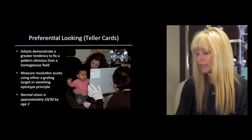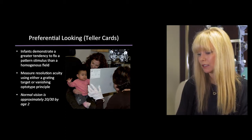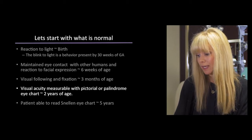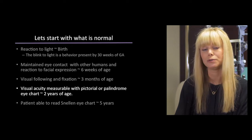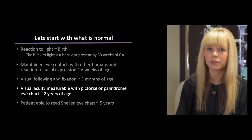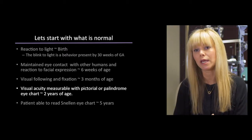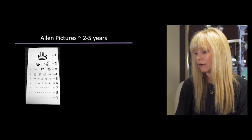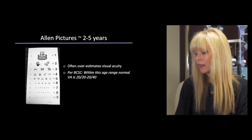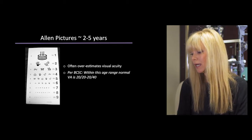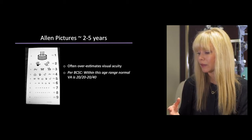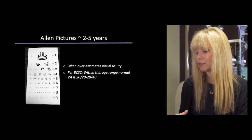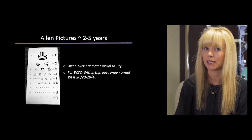Moving on to children around age two to four or five who are becoming more verbal but don't yet have a good command of letters and numbers, we can't ask them to read the Snellen chart, but we can use certain eye charts. Allen picture charts are one example. These often overestimate a child's visual acuity, and per the BCSC series, normal visual acuity in the two-to-five-year age range with this testing can range from 20/20 to 20/40.